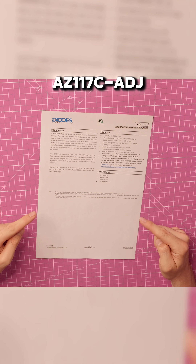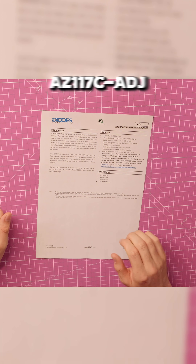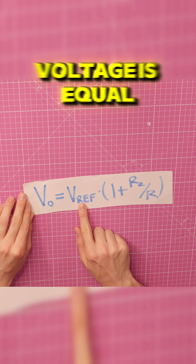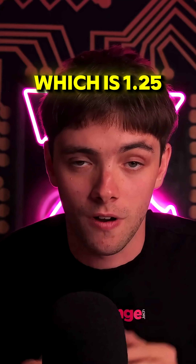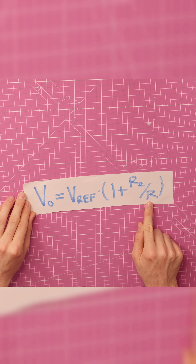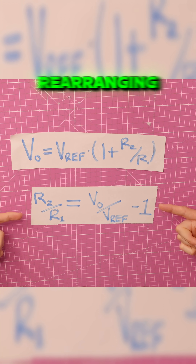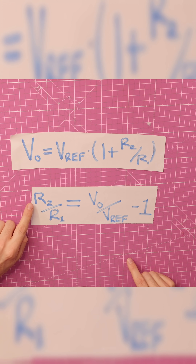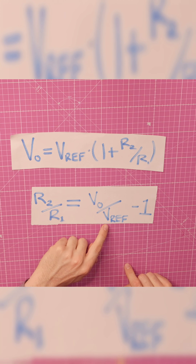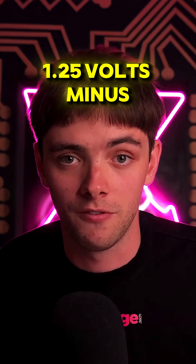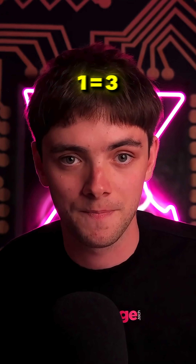I've chosen the AZ117C-ADJ. Let's get designing. With linear regulators, the output voltage is equal to the voltage reference — which is 1.25 for this reg — multiplied by one plus R2 over R1. Rearranging, the resistor ratio R2 over R1 equals Vout over Vref minus 1, which is 5 volts over 1.25 volts minus 1, equals 3.